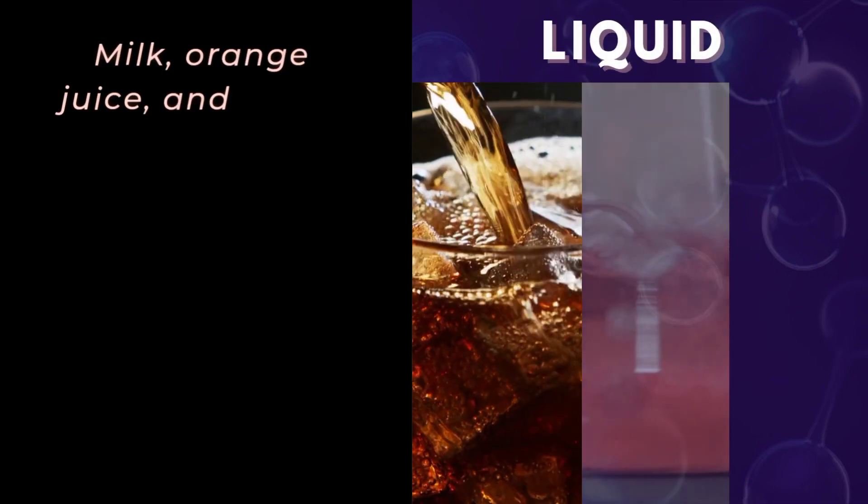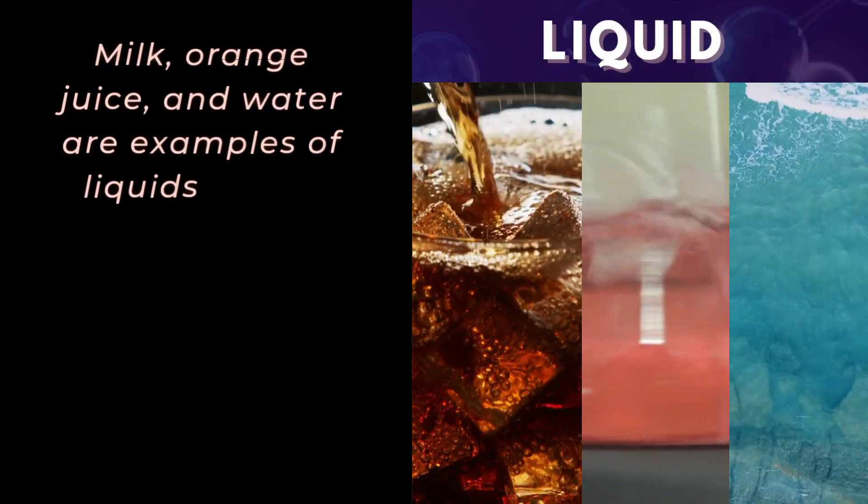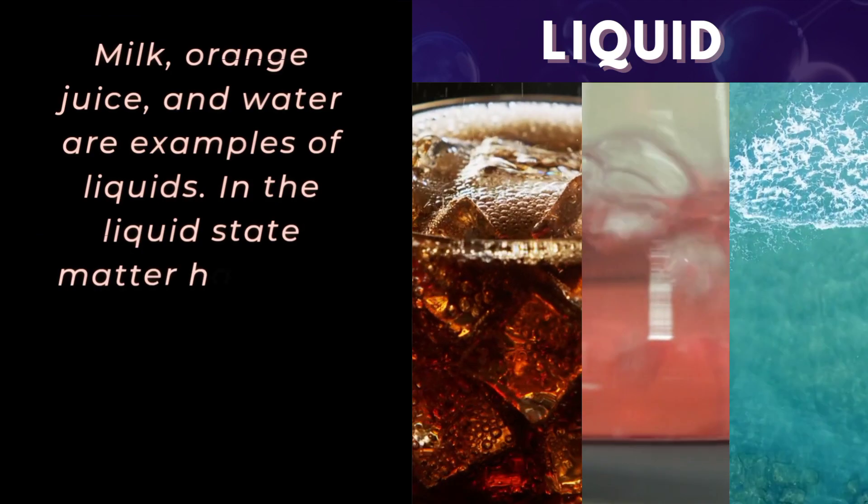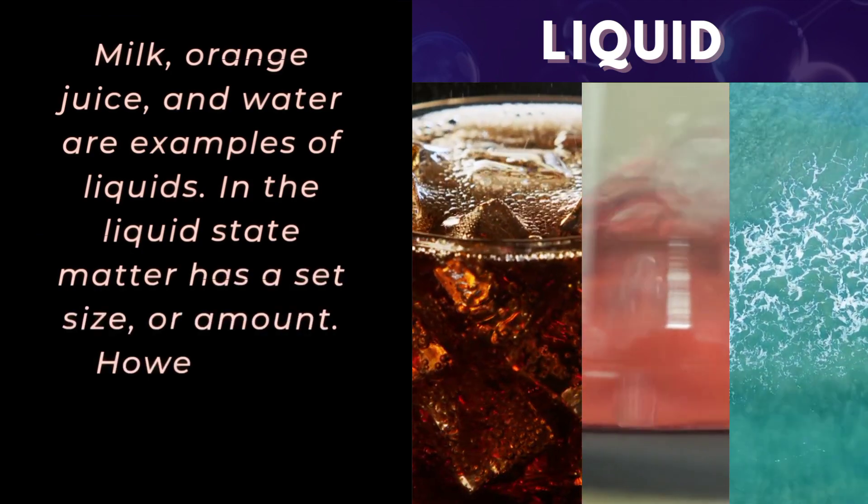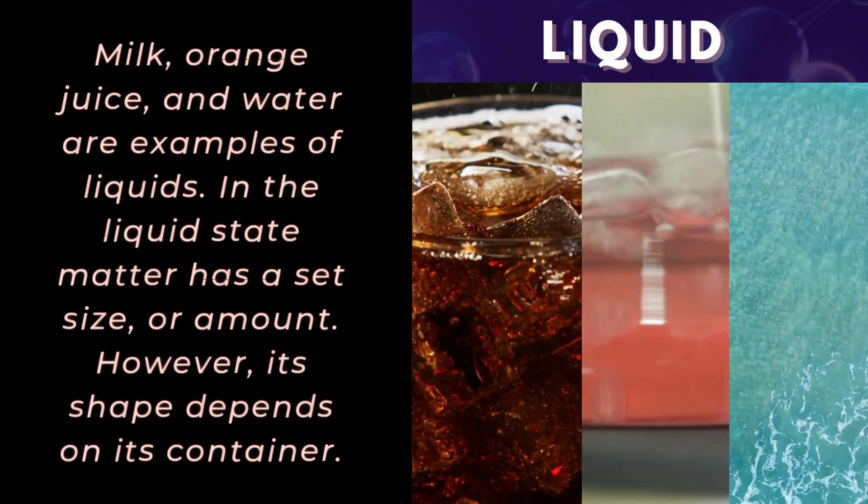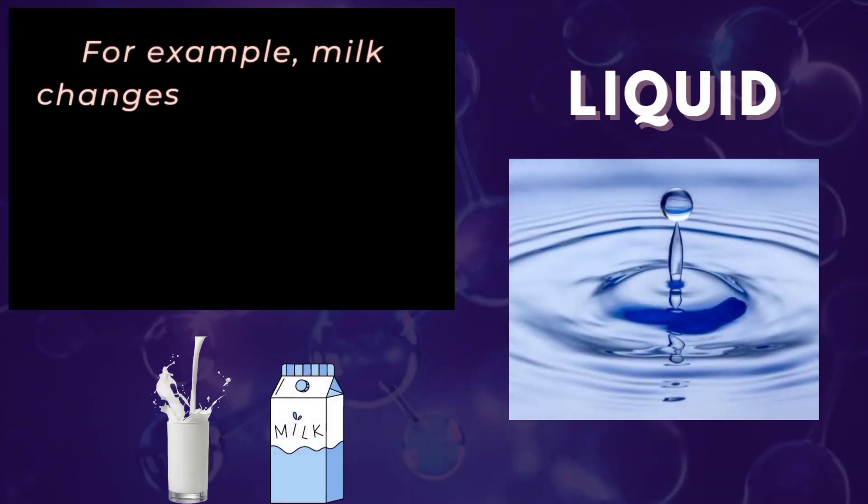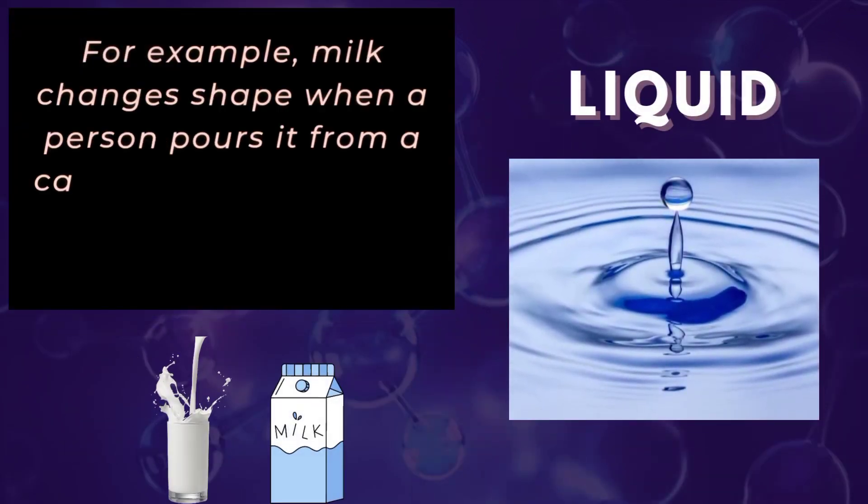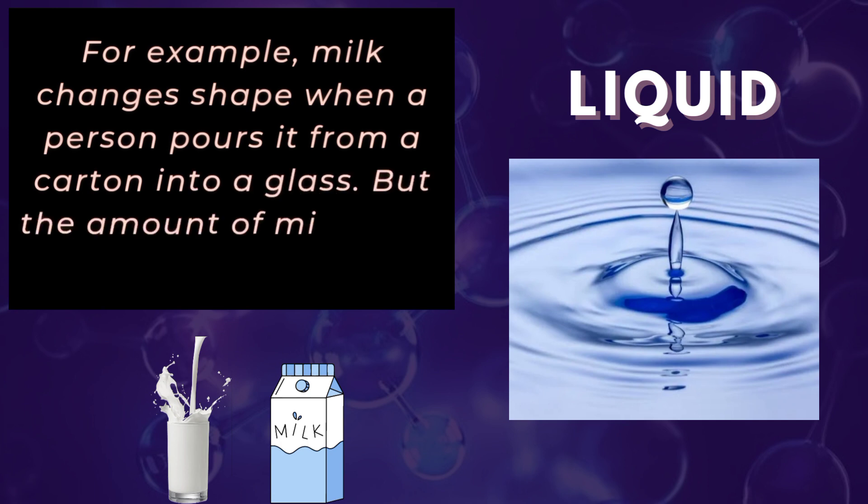Milk, orange juice, and water are examples of liquids. In the liquid state, matter has a set size or amount. However, its shape depends on its container. For example, milk changes shape when a person pours it from a carton into a glass, but the amount of milk stays the same.